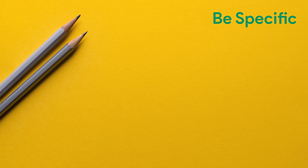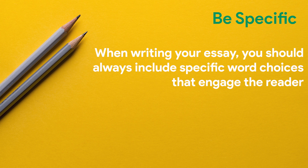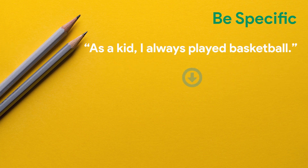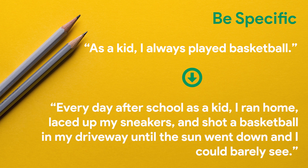Strategy two: Be specific. When writing your essay, you should always include specific word choices that engage the reader. For example, 'as a kid, I always played basketball' can be improved by saying: 'Every day after school as a kid, I ran home, laced up my sneakers, and shot a basketball in my driveway until the sun went down and I could barely see.' By describing in detail every element of playing basketball, you're painting a clear picture for the reader and putting them in your shoes.